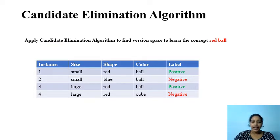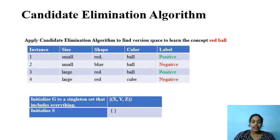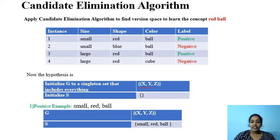We are going to apply the Candidate Elimination Algorithm to find the version space for the concept 'red ball'. The training set has four instances — two positive and two negative. There are three attributes: size, shape, and color. We start with G accepting all instances using hypothesis (x, y, z) and S accepting no instance, represented as the null set.